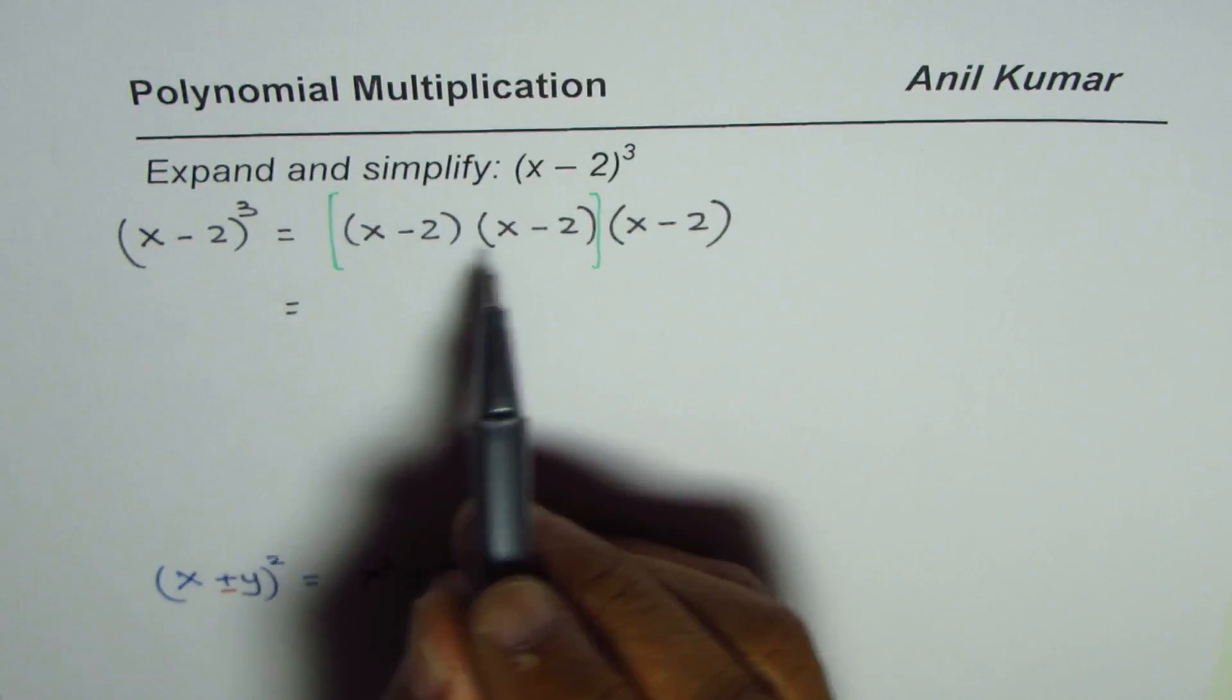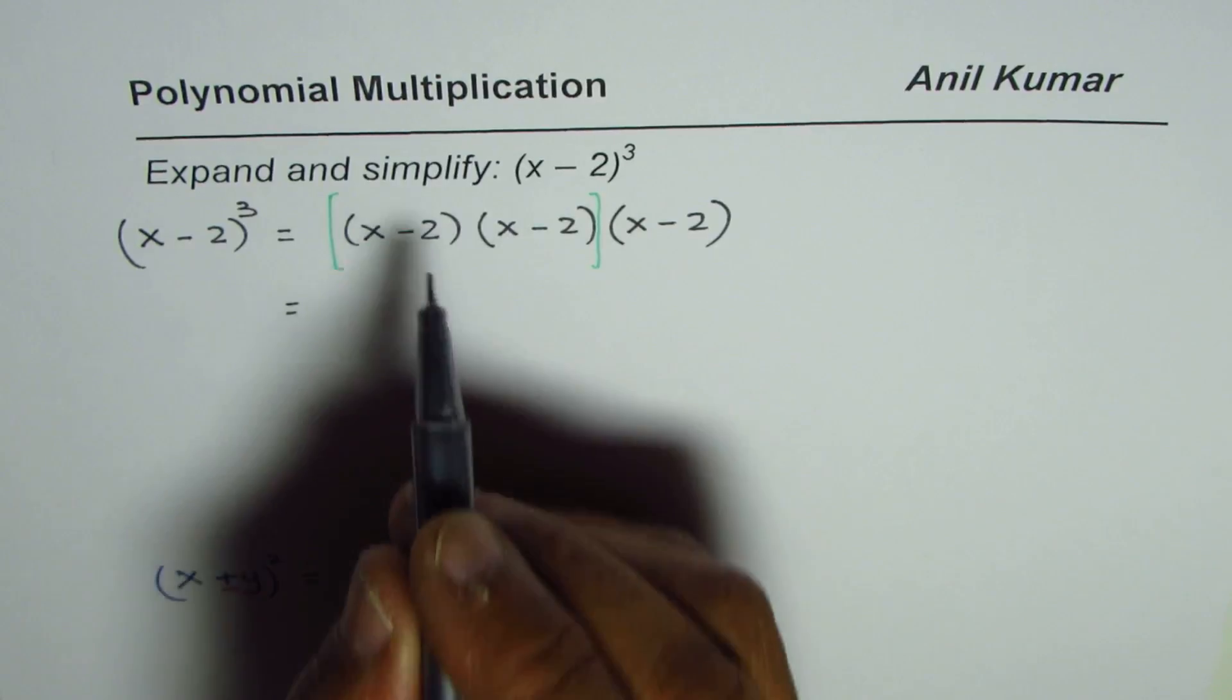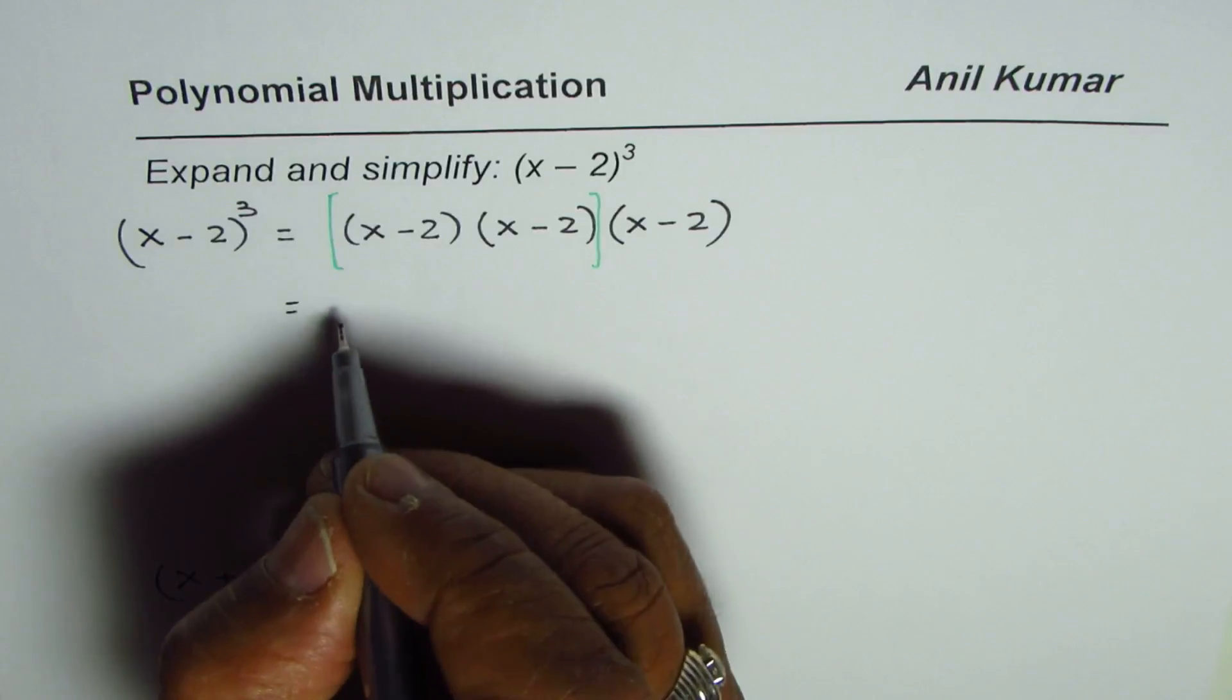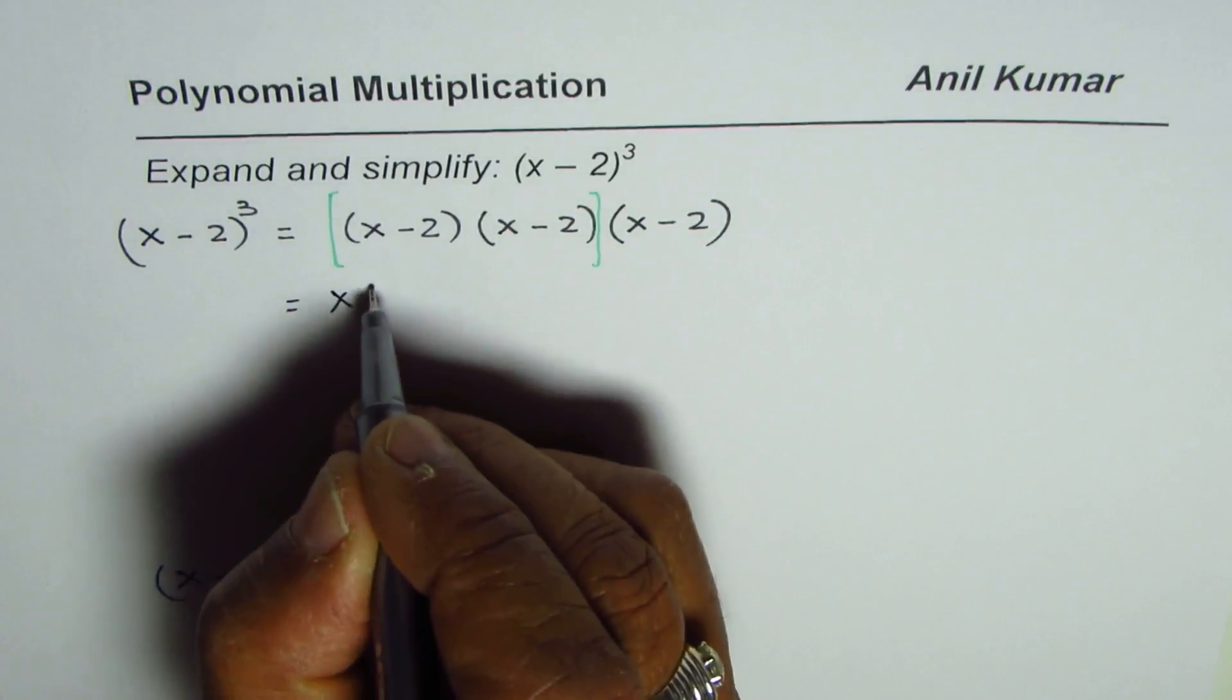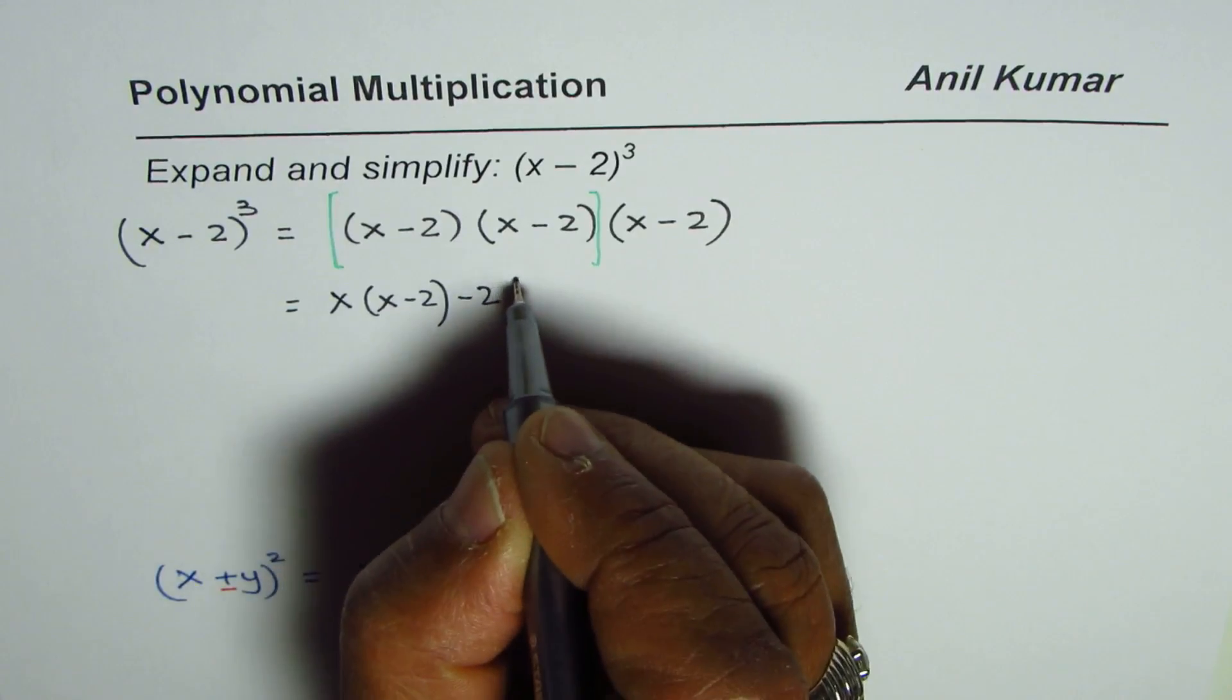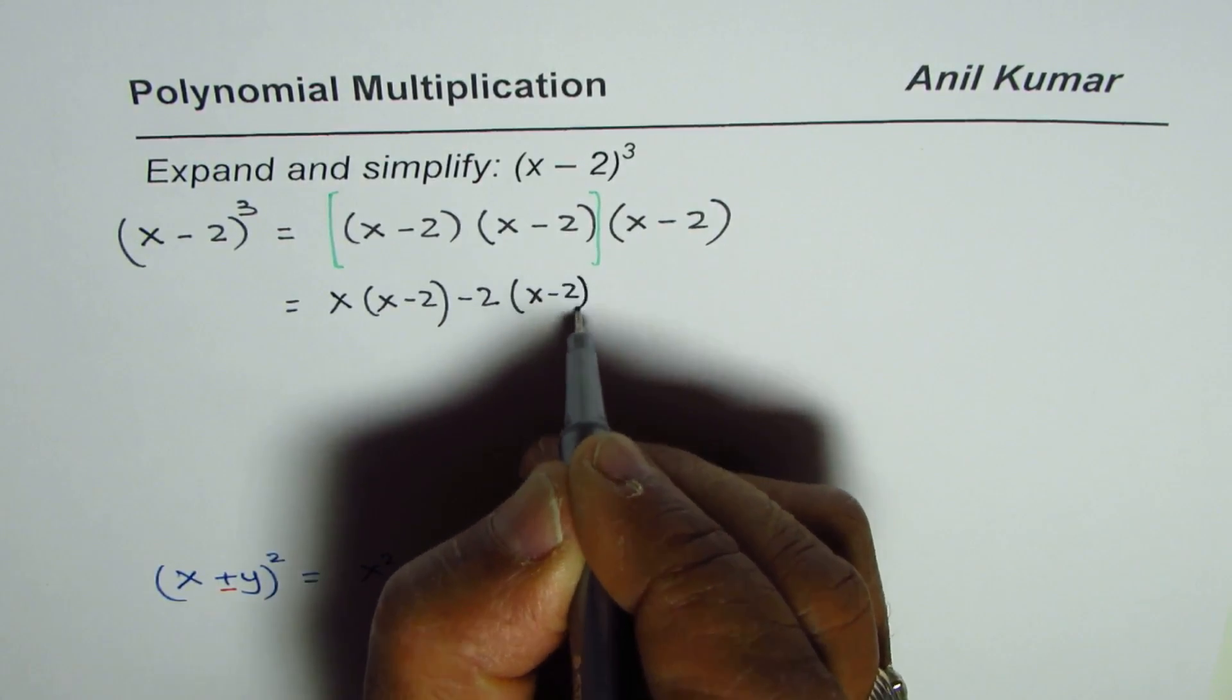But in our case, we will do one by one. So we will apply the distributive property. First, we will multiply by x, x minus 2. And then we will multiply by minus 2, x minus 2.